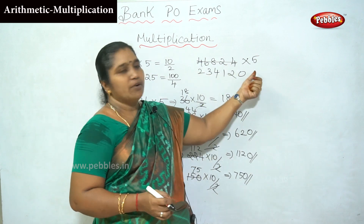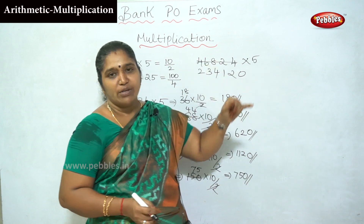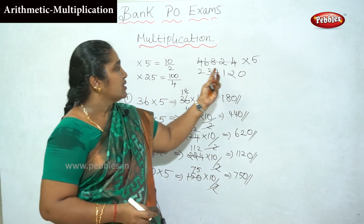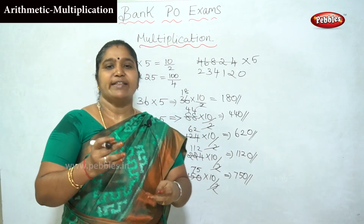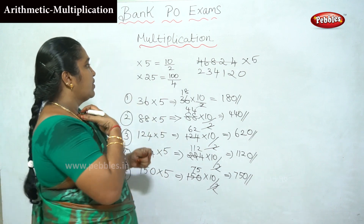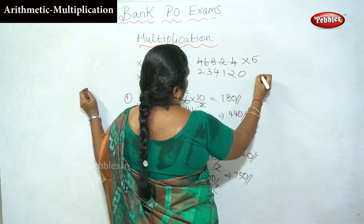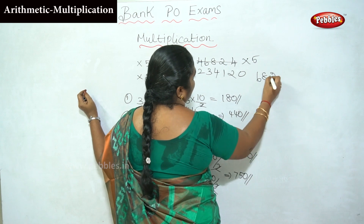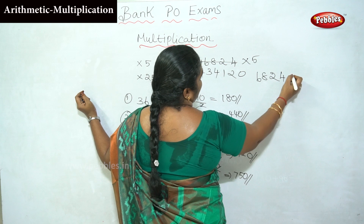We usually do it this way. Now, for 46824 into 5: we put the number, halve it, and add zero at the end. The result comes from dividing by 2 and appending zero.